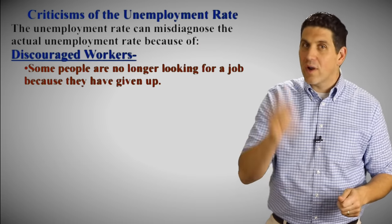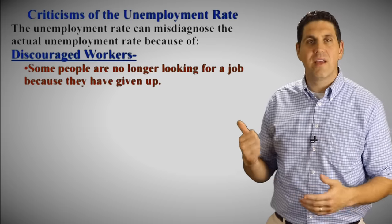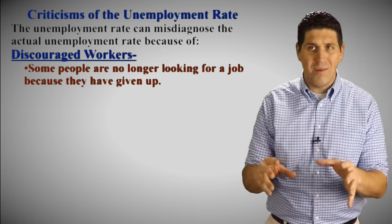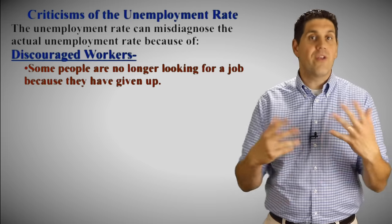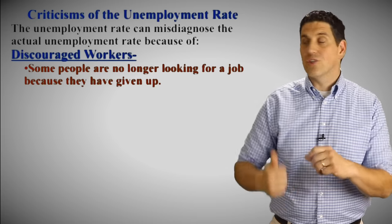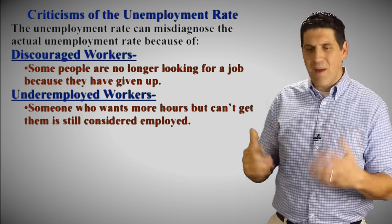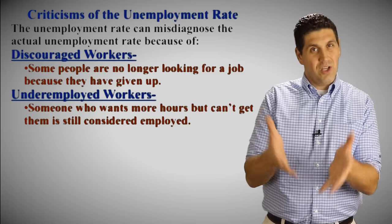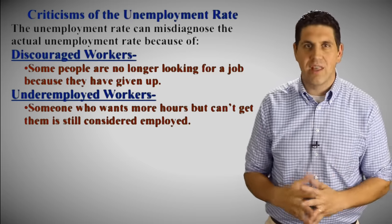The unemployment rate also has some criticisms. Discouraged workers — people who stop looking for work — are not counted in the labor force or considered unemployed, even though in real life they are. This makes the unemployment rate look lower than it actually is. Also, part-time workers are counted as fully employed, so someone working part-time but wanting full-time work is still counted as fully employed. The unemployment rate doesn't perfectly show what's actually happening in the economy.